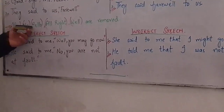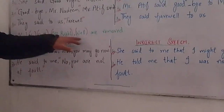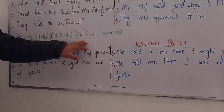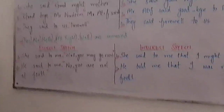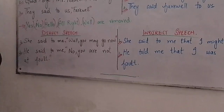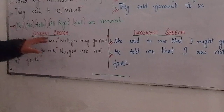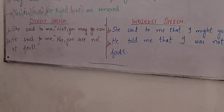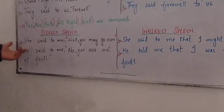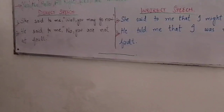Next: the words yes, no, hello, all right, and well are removed when changing from direct speech into indirect speech. We remove all these words. For example, 'She said to me, well, you may go now' — here the word 'well' is removed.